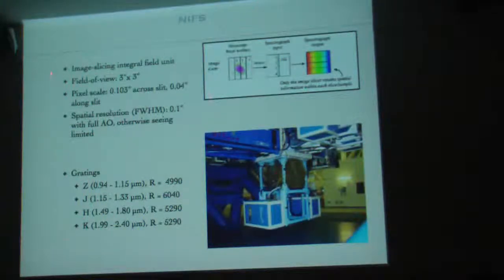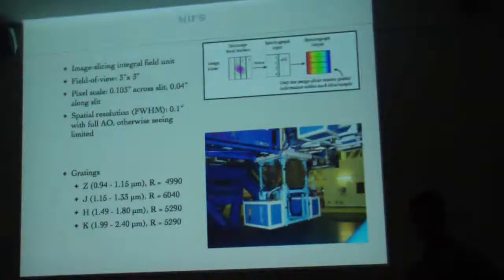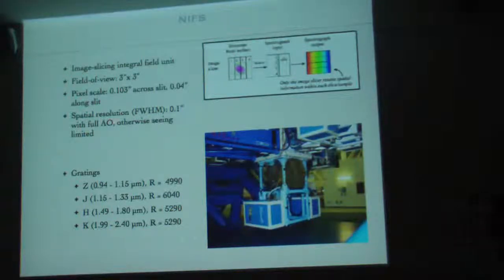The advantage of this is you can take a spectrum of a whole field all at once. For NIFS, it has a field of view of 3 by 3 arc seconds. This is the pixel scale, and there's a resolution of 0.1 arc seconds when you're using the adaptive optics instrument, ALTAIR. These are the gratings that NIFS has as well. Here's what it looks like on the telescope.